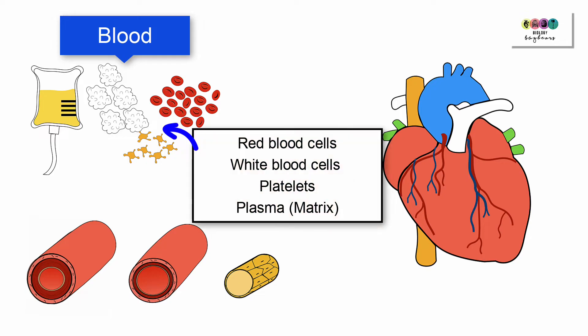Then there's the blood which is made up of red blood cells, white blood cells, platelets all floating around in a liquid matrix called plasma.